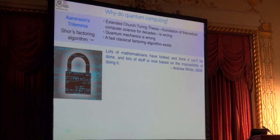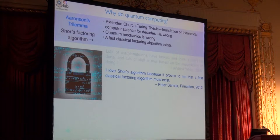A third possibility is that a fast classical factoring algorithm exists. So, for years when I gave this slide, I put up this quote. Lots of mathematicians have looked and think it can't be done. Lots of stuff is now based on the impossibility of doing it. And I would say, apologies for the self-quote, but it's impossible to find something interesting said by a mathematician. And that was true. And then until Peter Love pointed out that he was talking to Peter Sarnak, who's the editor of Acta Mathematica at Princeton, a very respected mathematician who said, I love Shor's algorithm because it proves to me that a fast classical factoring algorithm must exist. Peter got very excited. He said, well, you know, what's your intuition? What are your details? He said, I've got none. It just must. Maybe.